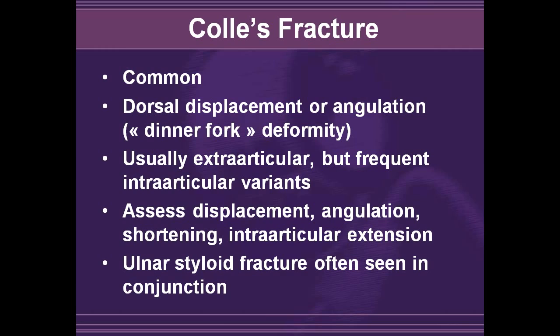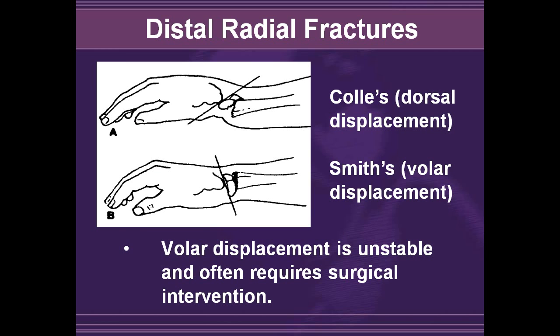Colles' fractures are common — an eponym for a fracture of the distal radius. Usually there is dorsal displacement or angulation with a dinner fork deformity. Most often it's extra-articular, but there may be variants extending into the radiocarpal joint. It's important to assess displacement, degree of angulation, impaction or shortening, and any intra-articular involvement. Ulnar styloid fractures are often seen in conjunction with this fracture. Compare this to a Smith fracture, where the distal fractured portion is displaced inferiorly or volarly — these tend not to heal as well since they slip inferiorly and may require open fixation, as these volar displacements are often unstable.